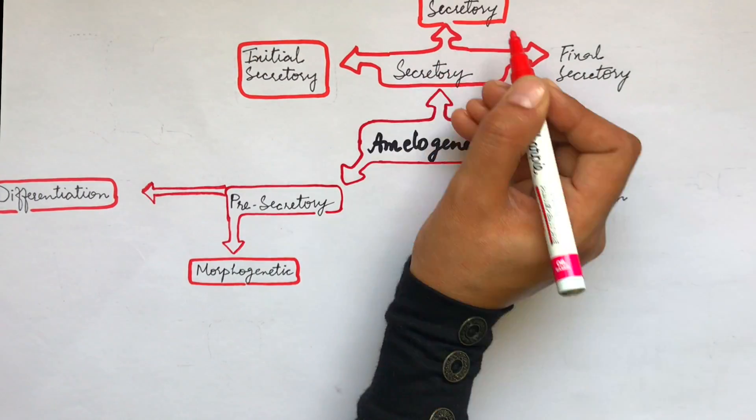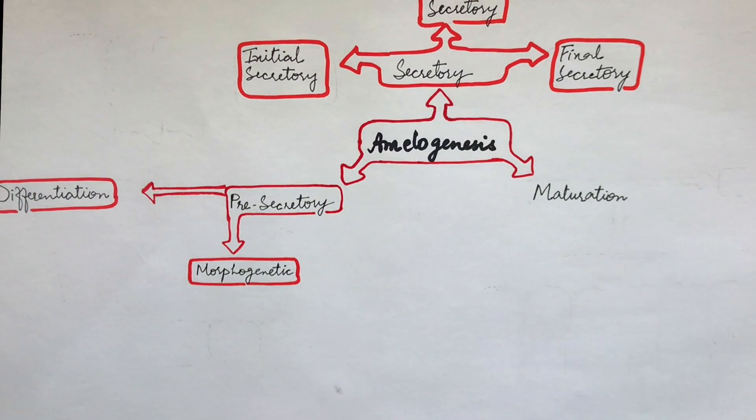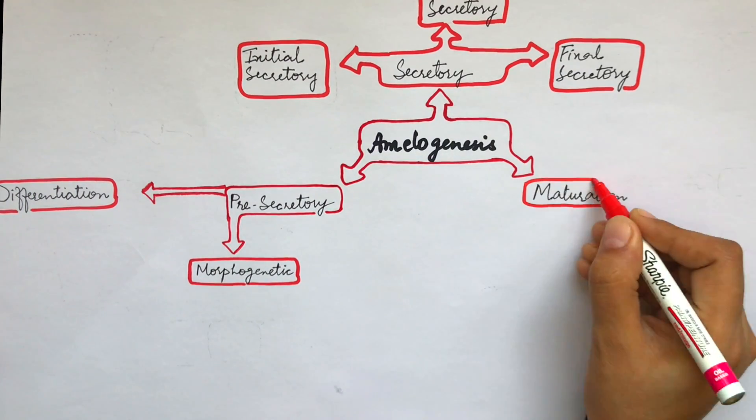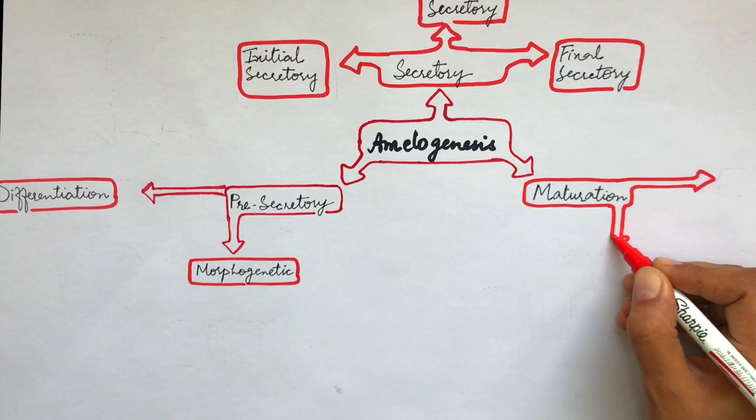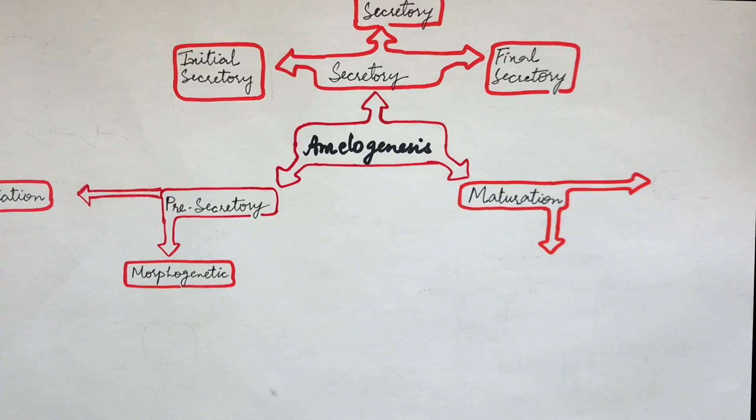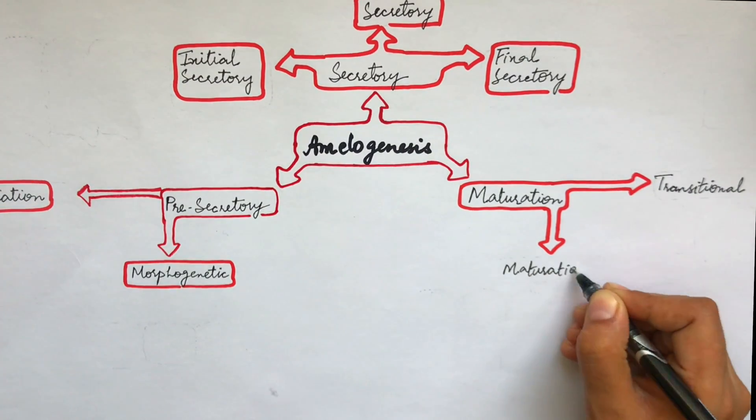In the maturation phase, the proteins present in the enamel matrix are degraded and are replaced by specific ions and minerals. This stage is also divided into two other phases called the transitional phase and the maturation proper phase.